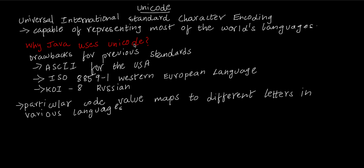Unicode is not the first standard — there are also very few other standards. For example, ASCII stands for American Standard Character encoding, which was used in the USA for English. There are also other standards such as ISO 8859-1 for Western European languages and KOI-8 for Russian languages.